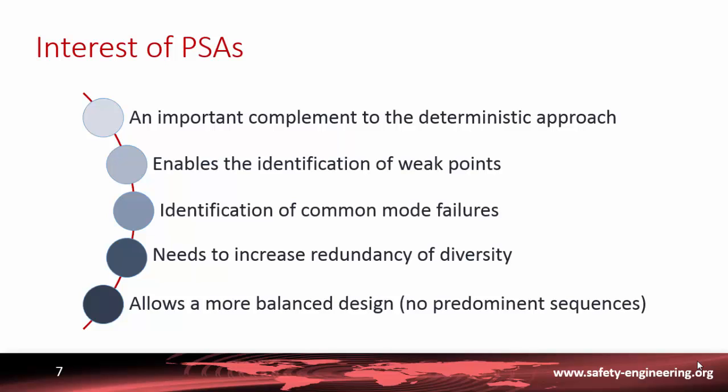Probabilistic safety assessment provides great interest and a very good insight into the safety of a nuclear power plant. First, it is an important complement to the deterministic approach. The deterministic approach focuses on specific types and families of accidents, with its main purpose being to define and design the safety systems as lines of defense in various scenarios. A second interest is the identification of weak points throughout the whole plant — through hierarchization of sequences, identifying the most important ones allows taking additional measures to reduce their probability.